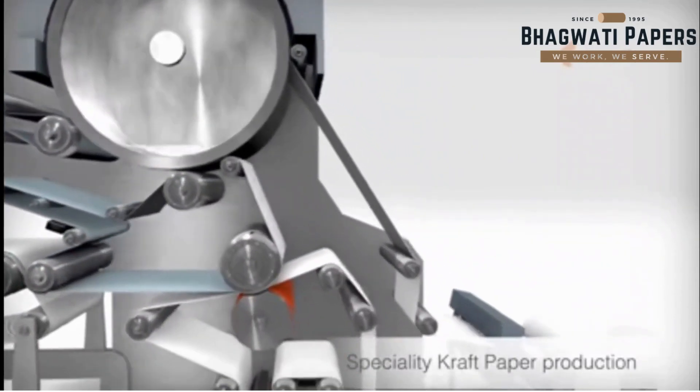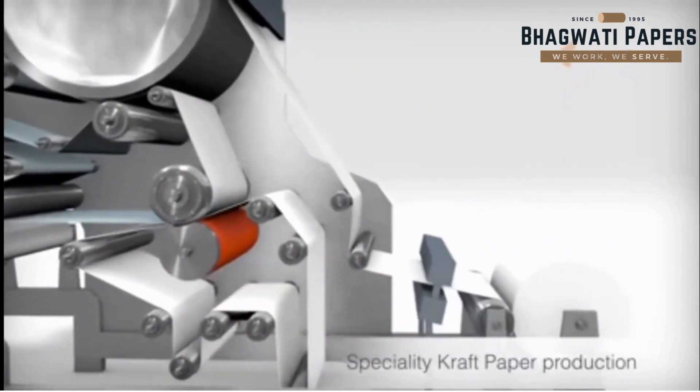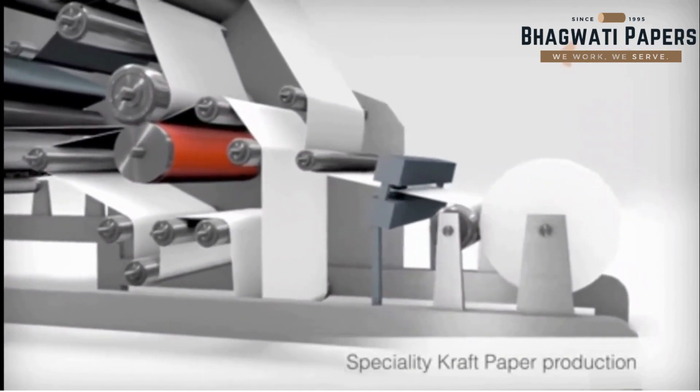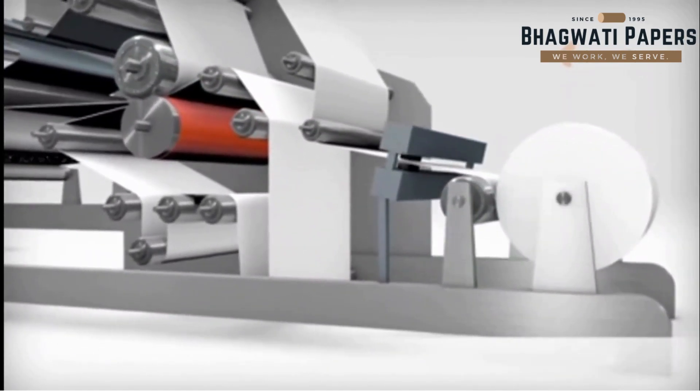After one rotation of the Yankee cylinder, the paper passes a scanner that controls the moisture and basis weight profiles. In the final stage, the finished paper is wound on a big jumbo reel.